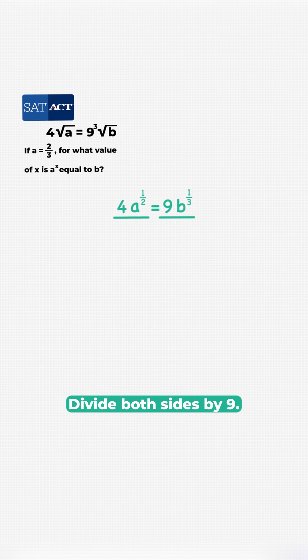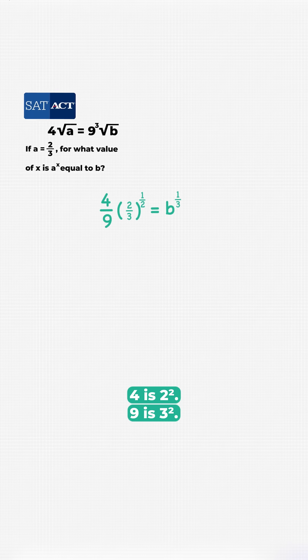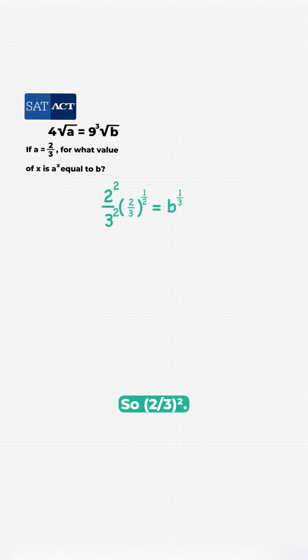Let's isolate B, divide both sides by 9. Now sub in A, let's clean that up. 4 is 2 squared, 9 is 3 squared, so 2 thirds squared.